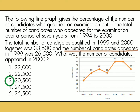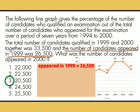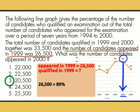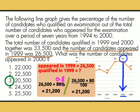It says that the number of candidates appeared in 1999 was 26,500. Para makuha ang number of qualified sa 1999, ay multiply 26,500 to 80% — kasi nga, base sa ating graph ay 80% ang qualified sa 1999. So ang 80% ng 26,500 ay 21,200 — kin-convert na natin siya agad-agad from percent to decimal. 21,200 din ang labas niyan. So 21,200 ang qualified sa 1999.